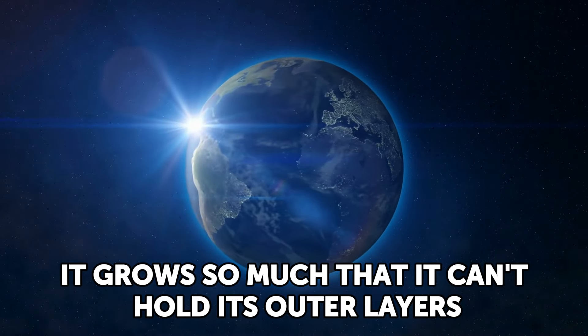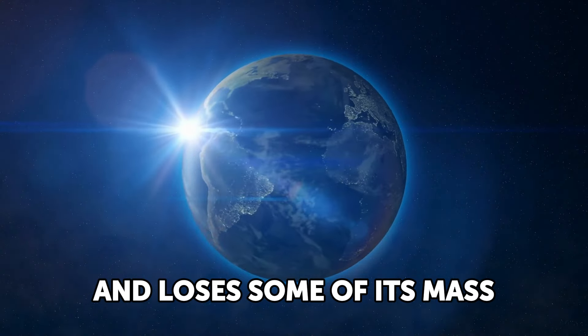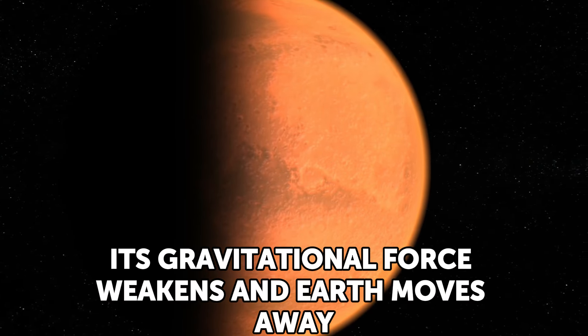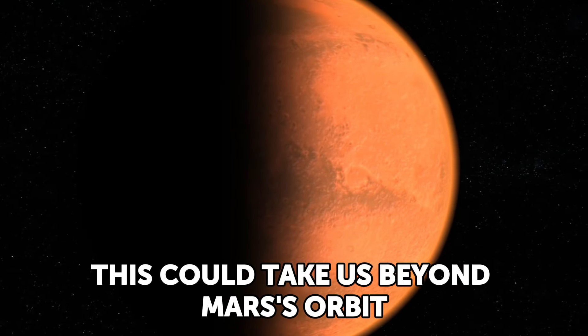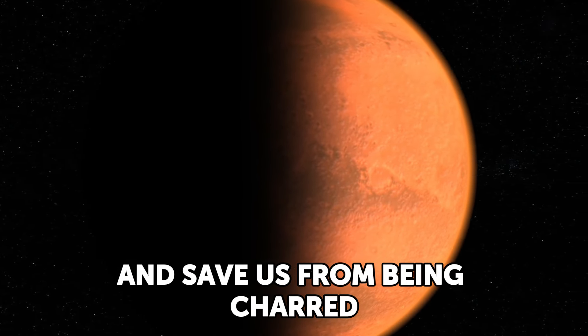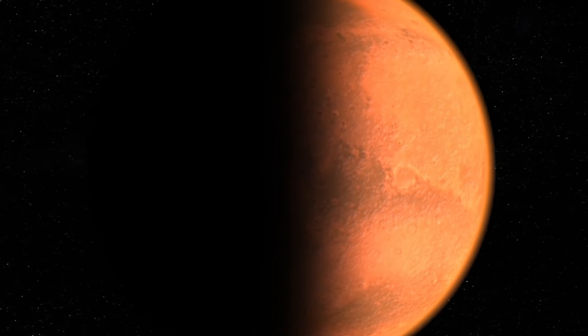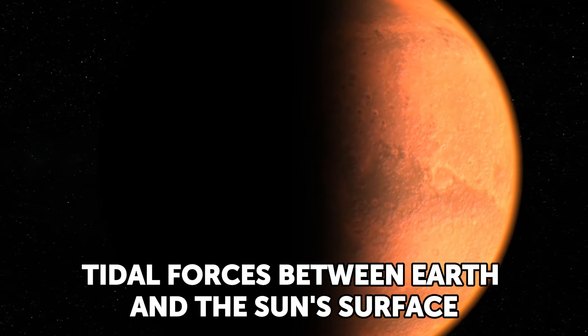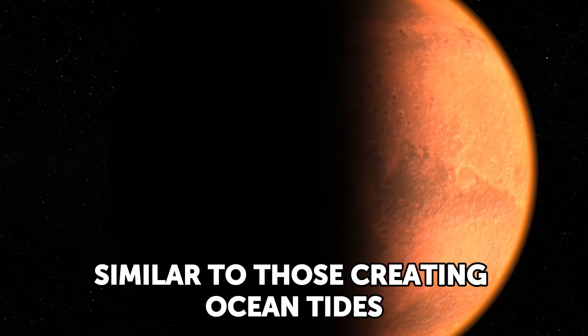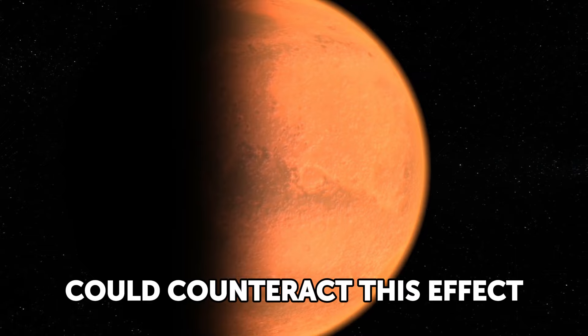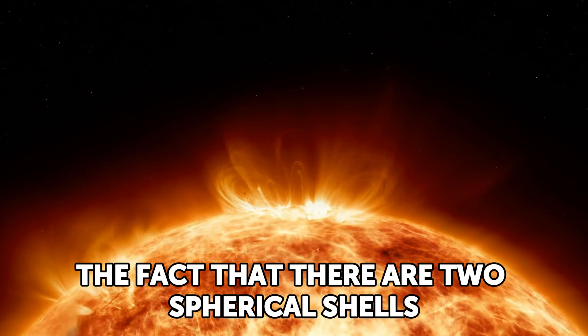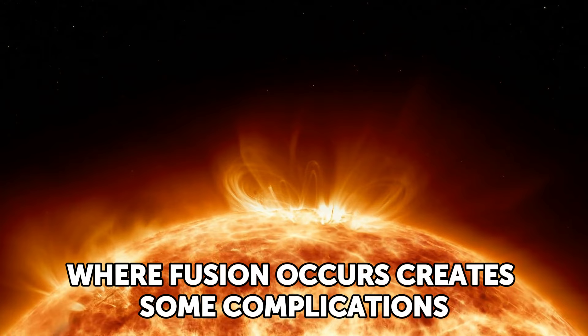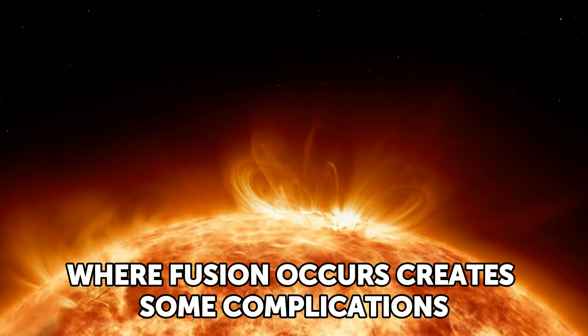Does this mean the sun will engulf our planet? Let's see. Every time the sun swells, it grows so much that it can't hold its outer layers and loses some of its mass. As a result, its gravitational force weakens and Earth moves away. This could take us beyond Mars's orbit and save us from being charred. However, tidal forces between Earth and the sun's surface, similar to those creating ocean tides, could counteract this effect. It's not entirely clear what will happen to us.